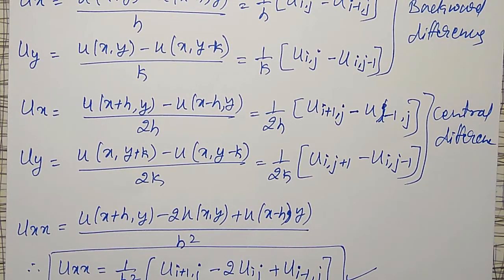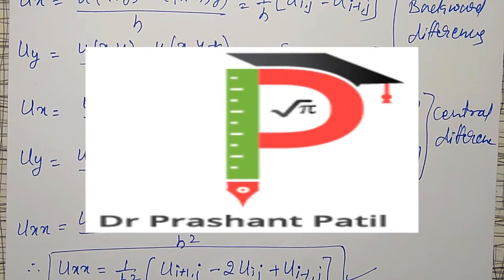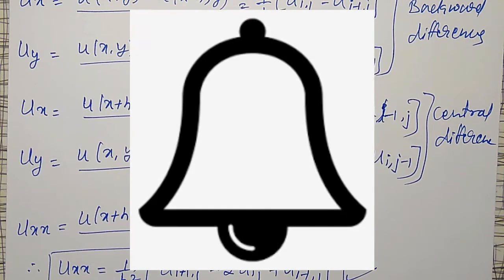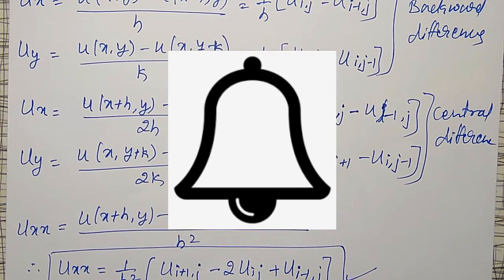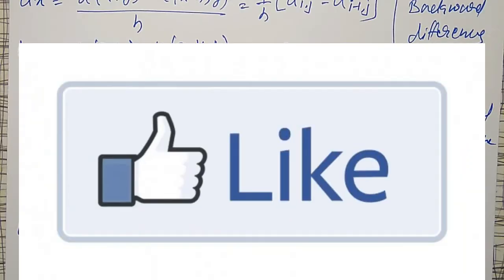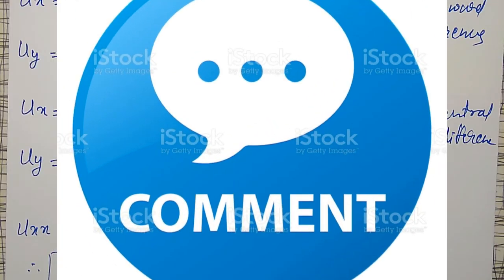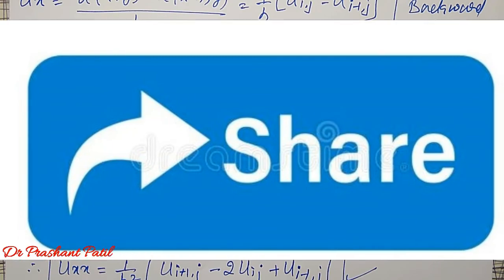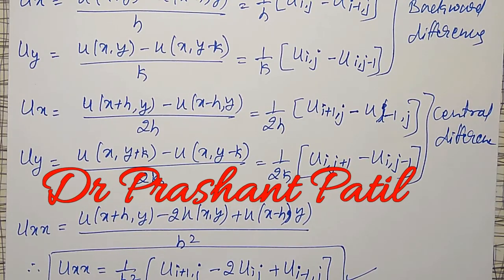Using these important results — u_x, u_y, u_xx, and u_yy — I am going to derive the explicit formulas for the wave equation in my next video. If you have not subscribed to my channel, please subscribe. Don't forget to hit the bell icon so that you will get notifications of my next videos. Like this video, comment, and share. Thank you friends.